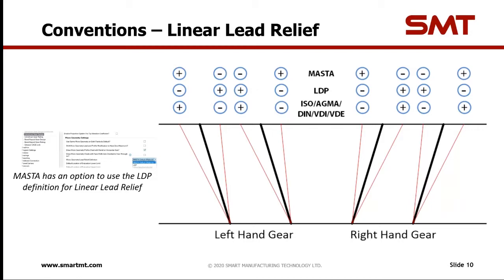Different sources define positive or negative linear lead relief in slightly different ways. Linear lead relief is also called helix angle modification, lead slope, or other terms. This plot is available in the help file and on the webinar website, showing a comparison between different source definitions. If you want to switch between them, you can do so within the Master settings. By default we use the Master default setup, but you can switch to use the LDP definition or the ISO/DIN rating definition.